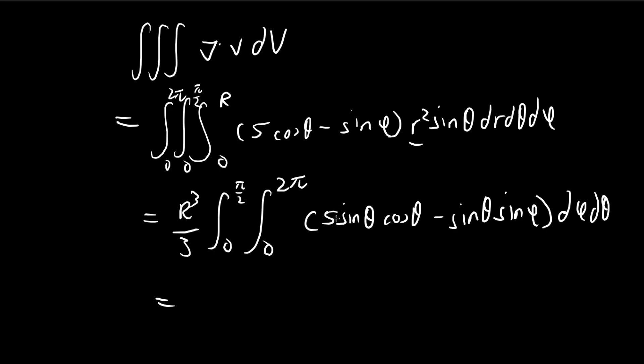So sine theta sine phi d phi d theta. Now for this term, I'm going to write this out. Now for this component over here, we have, we're integrating sine phi d phi from 0 to 2 pi. If you integrate a sine or a cosine with respect to something from 0 to 2 pi, all you get is 0 because, as you'll see, this becomes negative cosine phi.